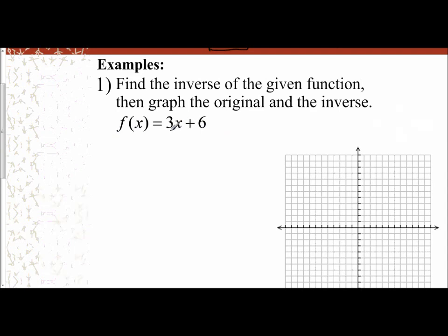And so we switch the x and the y. So I'm going to have x equals 3y plus 6. I would subtract 6. x minus 6 equals 3y. And then divide everything by 3. And so y equals 1 third x minus 2. So the inverse function, f inverse of x equals 1 third x minus 2.